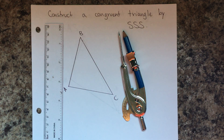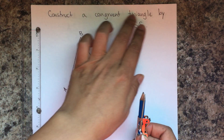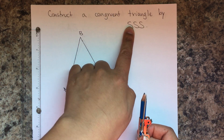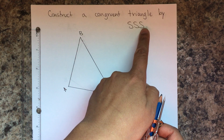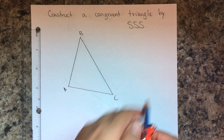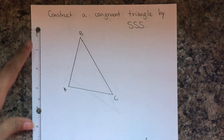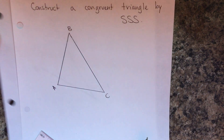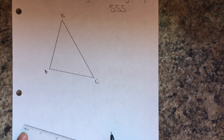We'll be needing a compass and a straightedge. What this means is that you're going to be copying one side, then you will copy the second side, and finally you will need the measurement of the third side — so you will need the measurements of all three sides. The first thing you will do is draw a line.